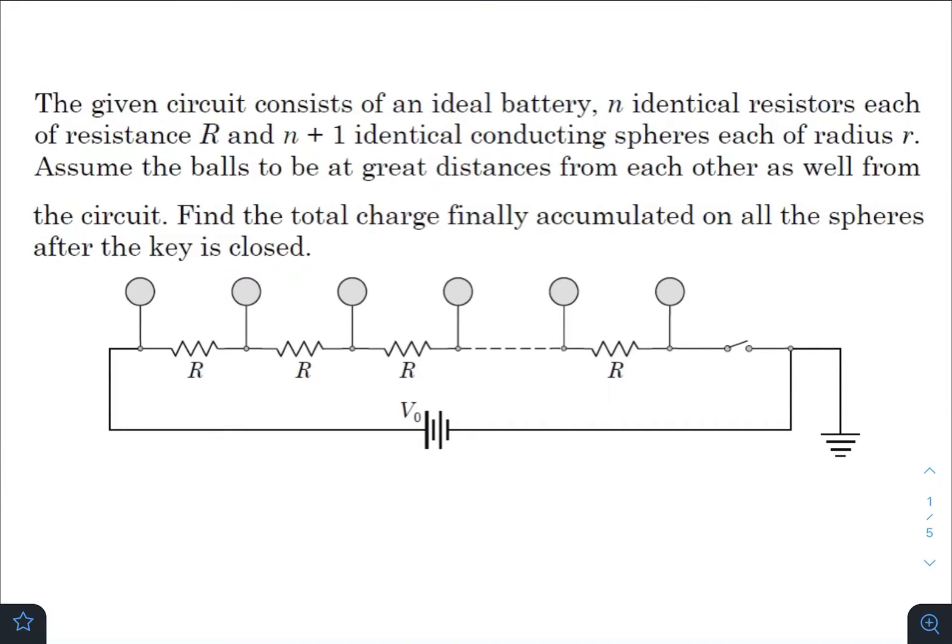Hey, what is up everyone, I hope all of you are doing great. In today's question we have the given circuit consisting of an ideal battery, n identical resistors each of resistance R, and n+1 identical conducting spheres each of radius r.